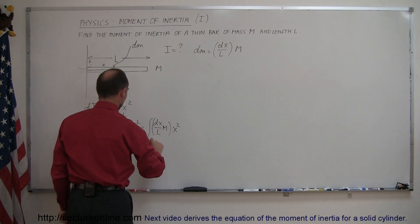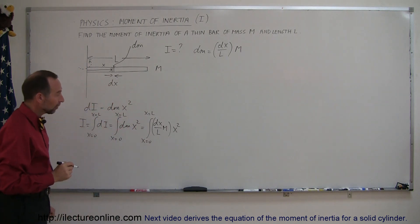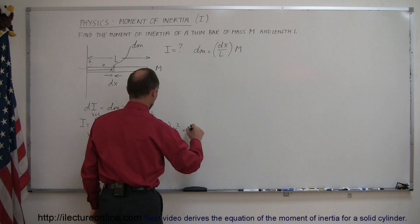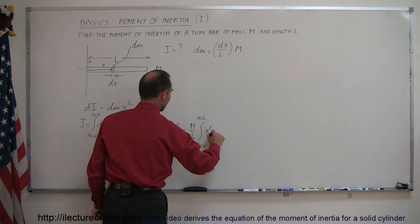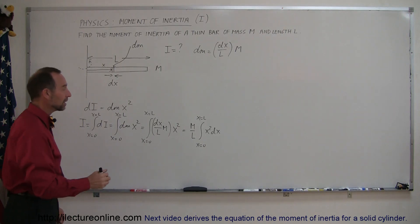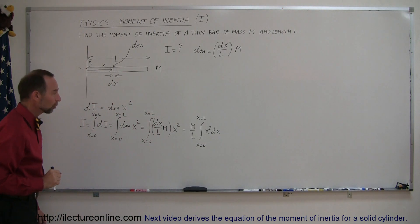And now, realizing that m and l are constants, the mass is a constant, the length is a constant, that can come out of the integral sign. So, this can now be written as m over l times the integral from x equals 0 to x equals l of x squared dx. And now, we're in business. Now, we can go ahead and integrate that because the dx is as a variable of x along with x squared.